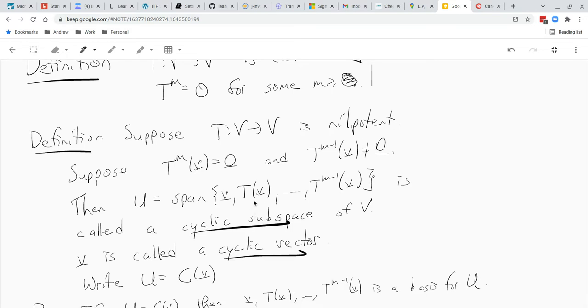Okay, because all it is, is you take v and powers of t and throw them all together in linear combinations. Okay, and notice this is also an invariant subspace as well and all that kind of nice stuff. Okay, and then if we do that, we call v a cyclic vector and we write c of v instead of u.